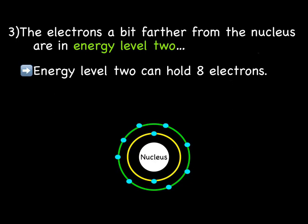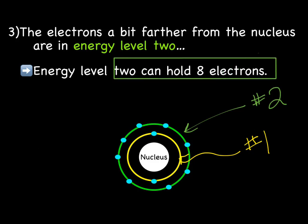The electrons that are a bit further from the nucleus are in energy level 2. In our model, the green here is energy level or shell 2. And as you can see, they are further away than the yellow, in this case energy level 1. And energy level 2 can hold 8 electrons.